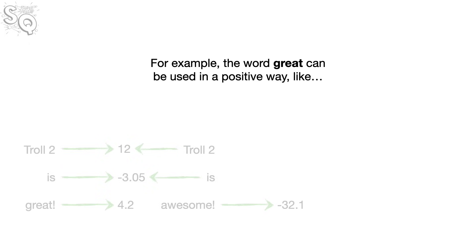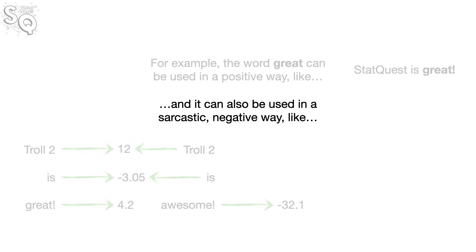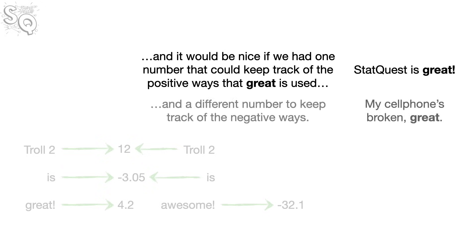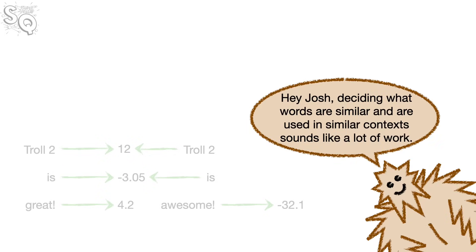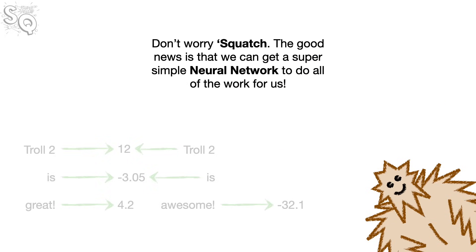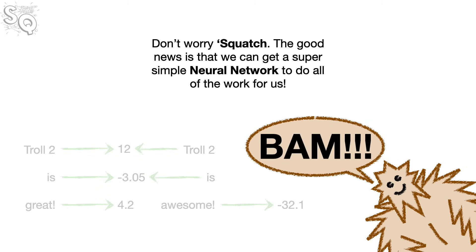For example, the word 'great' can be used in a positive way like 'StatQuest is great!', or in a sarcastic negative way like 'My cell phone's broken. Great!' It would be nice to have one number tracking the positive uses and another tracking the negative uses. The good news is that we can get a super simple neural network to do all of this work for us.